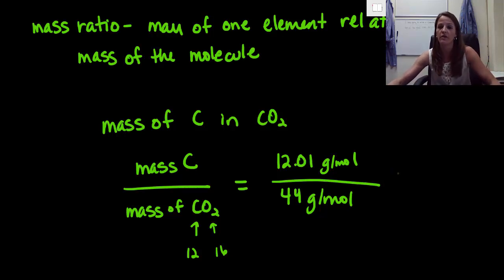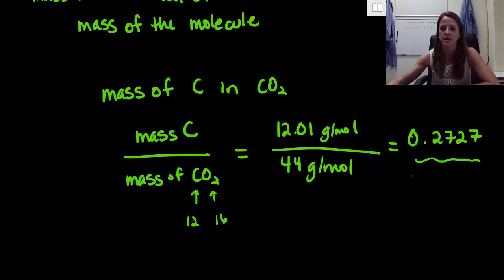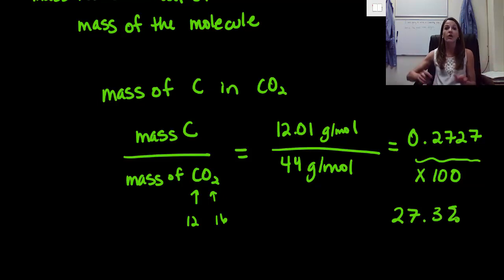So if we do this out, we do 12 divided by 44, we get a number that is essentially 0.2727, something like that. But what is that? That is just a garbage number. It's gibberish. That's not helpful. And so what we actually do is take this number and multiply it times 100. So we essentially make it a percent. So what we could say is that in carbon dioxide, we would have 27.3% carbon. So out of 100% of carbon dioxide, 27% of that is carbon. And then 100 minus 27 is oxygen.